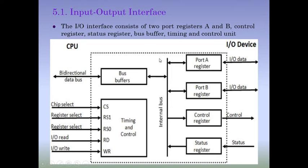Now we will learn what this interface consists of. Look at this diagram — this is the diagram of the interface connected between the processor and the external device, providing communication between them. This interface consists of four types of registers: Port A register, Port B register, Control register, and Status register. It also consists of a bus buffer, and a bidirectional bus is connected between the CPU and the interface, while input output data buses are connected between the interface and the external peripheral device.